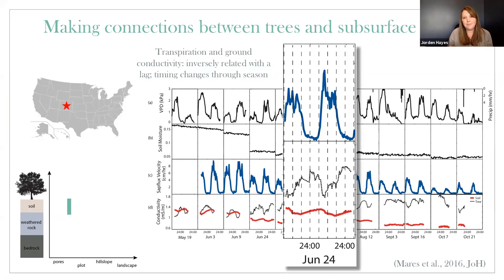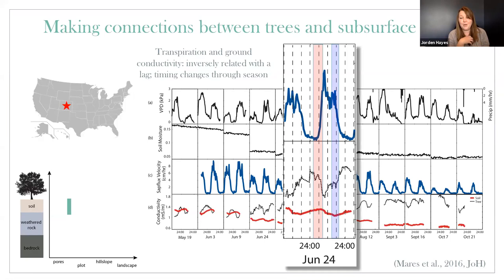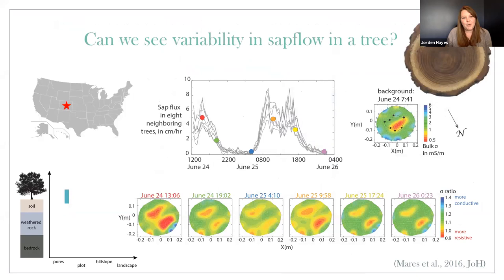Zooming in to one 24-hour period, there are a couple things you might notice between these observations. The tree turns on and the ground conductivity starts to decrease. The ground conductivity peaks four hours after the sap flow reaches its minimum — this is the time it takes to refill the subsurface storage that the trees are ultimately drawing water from.